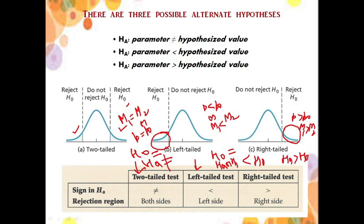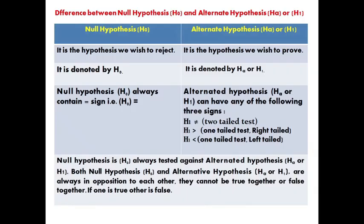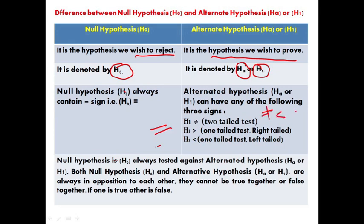The concept of null and alternate hypothesis: null hypothesis is the one which the researcher wishes to reject, while alternate hypothesis is the one the researcher wishes to prove. Null is depicted by H0 and alternate by HA or H1. Null hypothesis is always represented by the equal-to sign, while alternate is represented by not-equal-to, less-than, or greater-than signs. Both null and alternate hypothesis are always in opposition — they cannot be true together or false together.